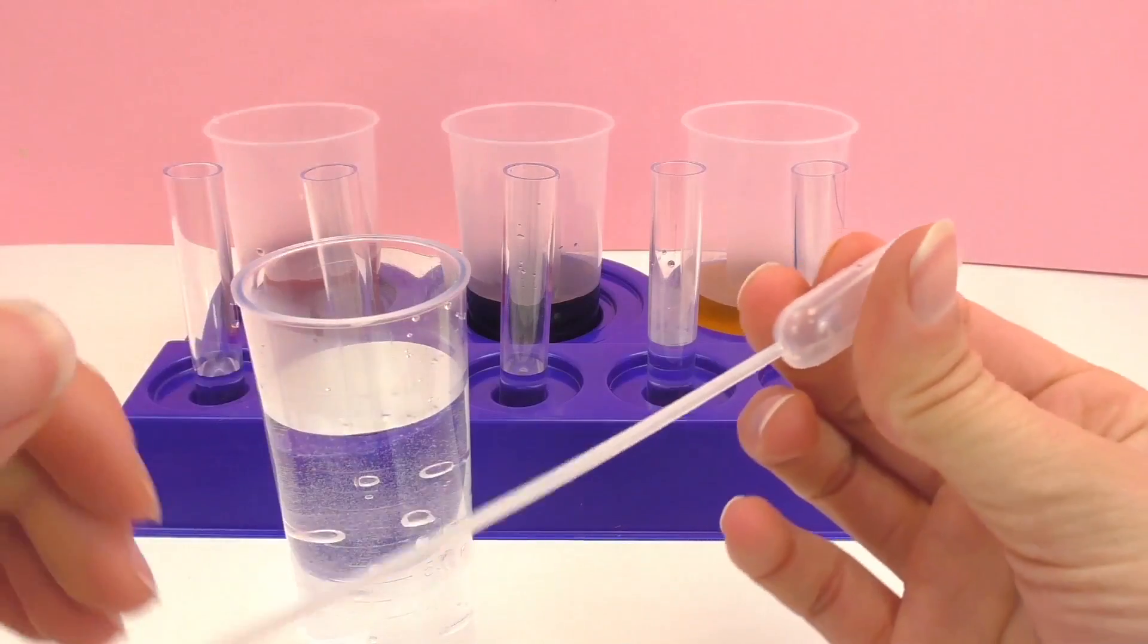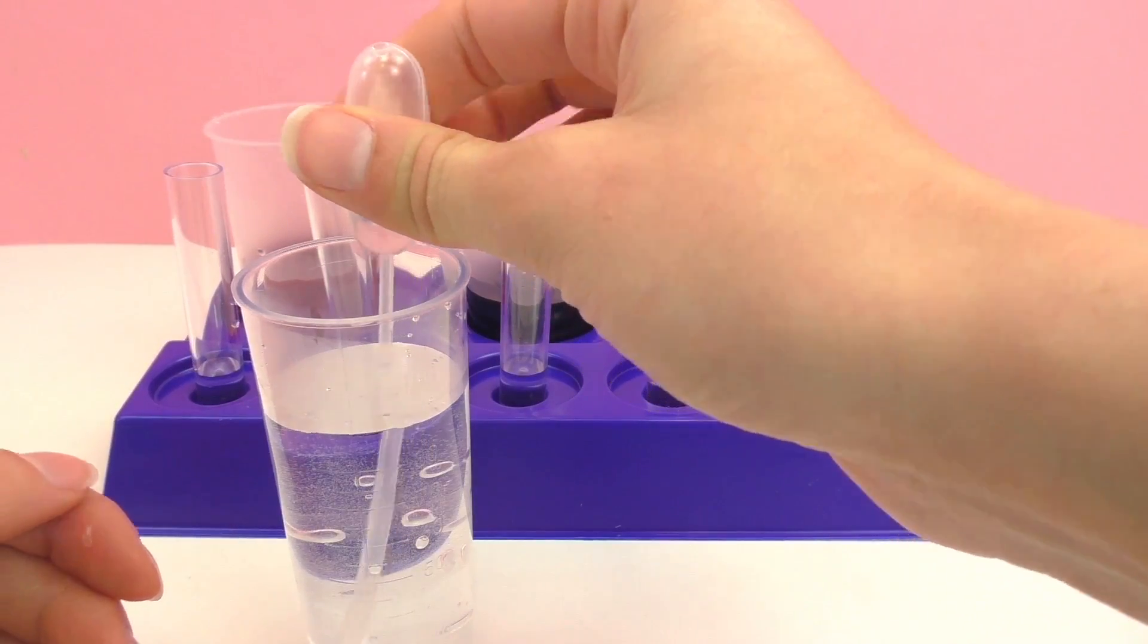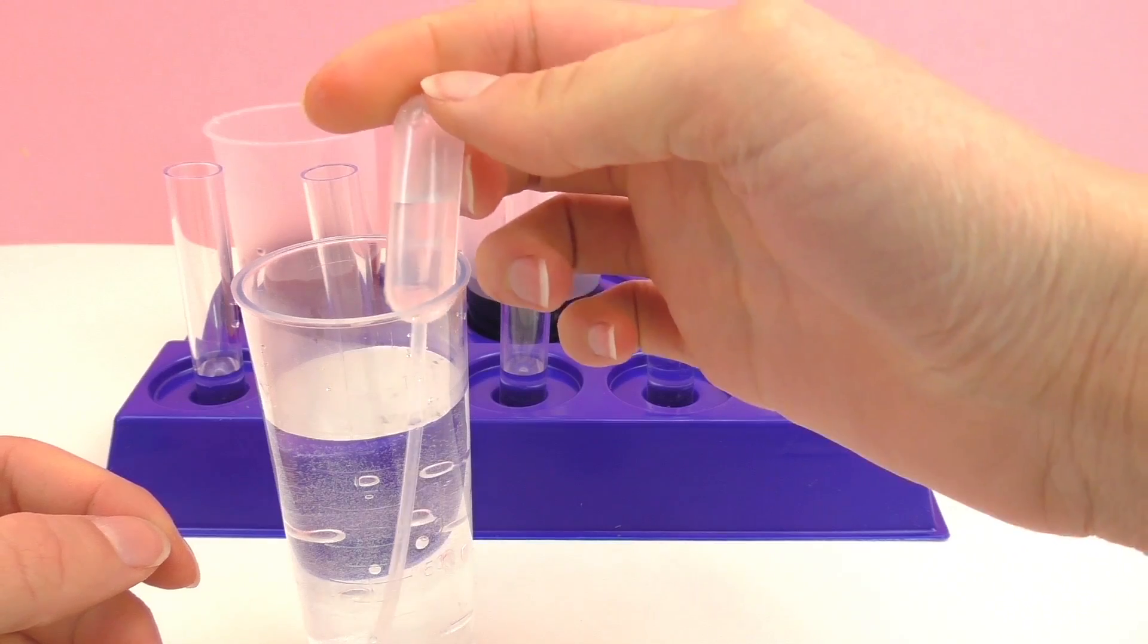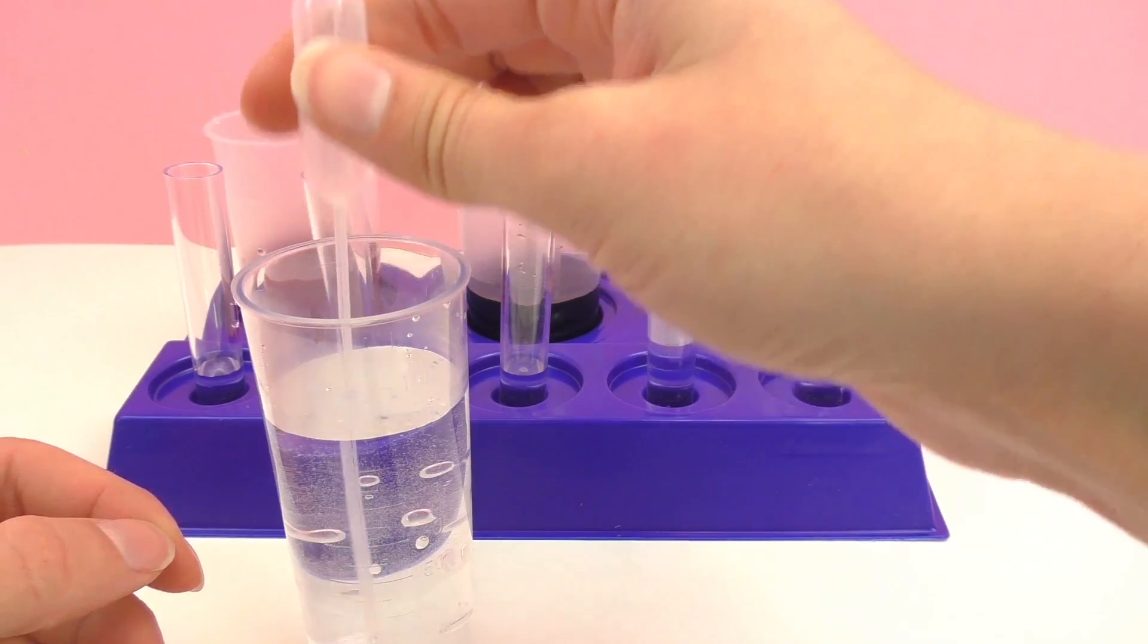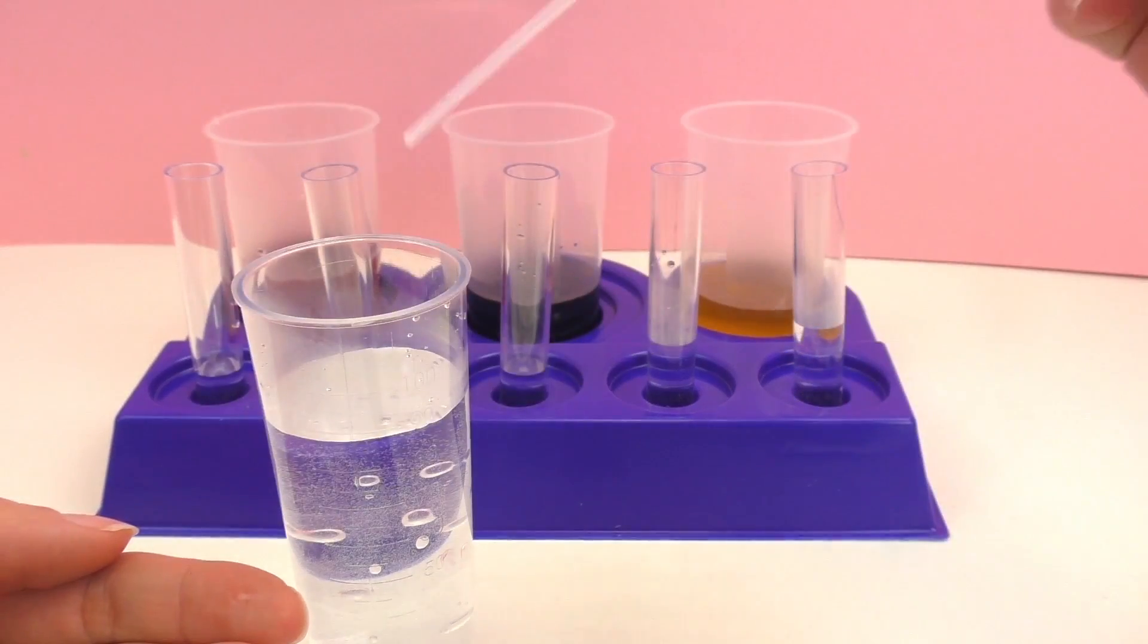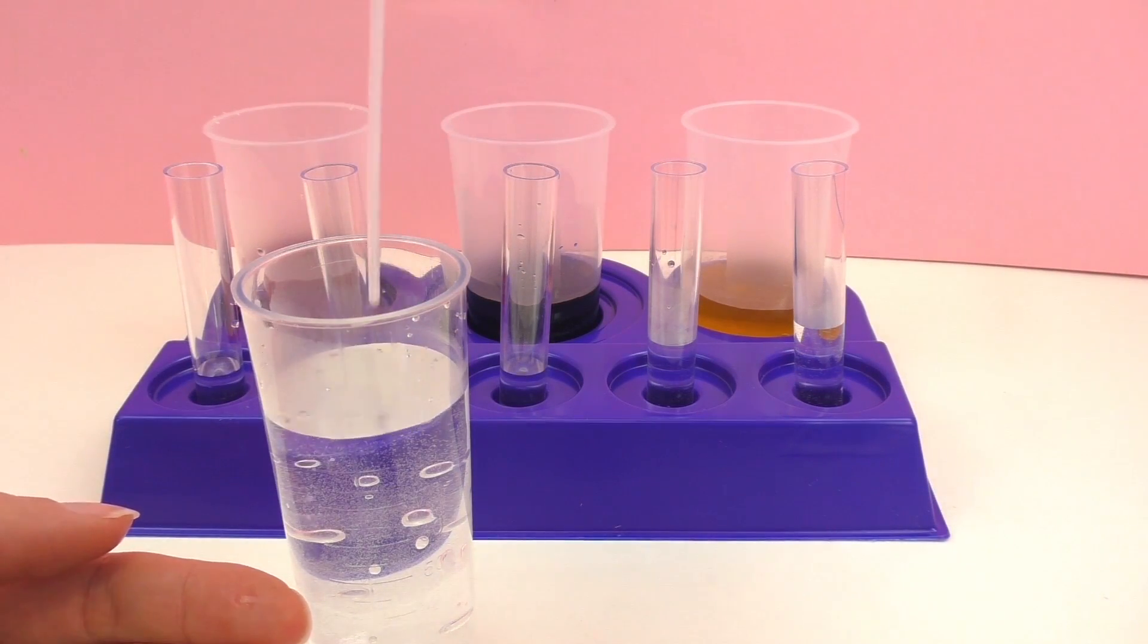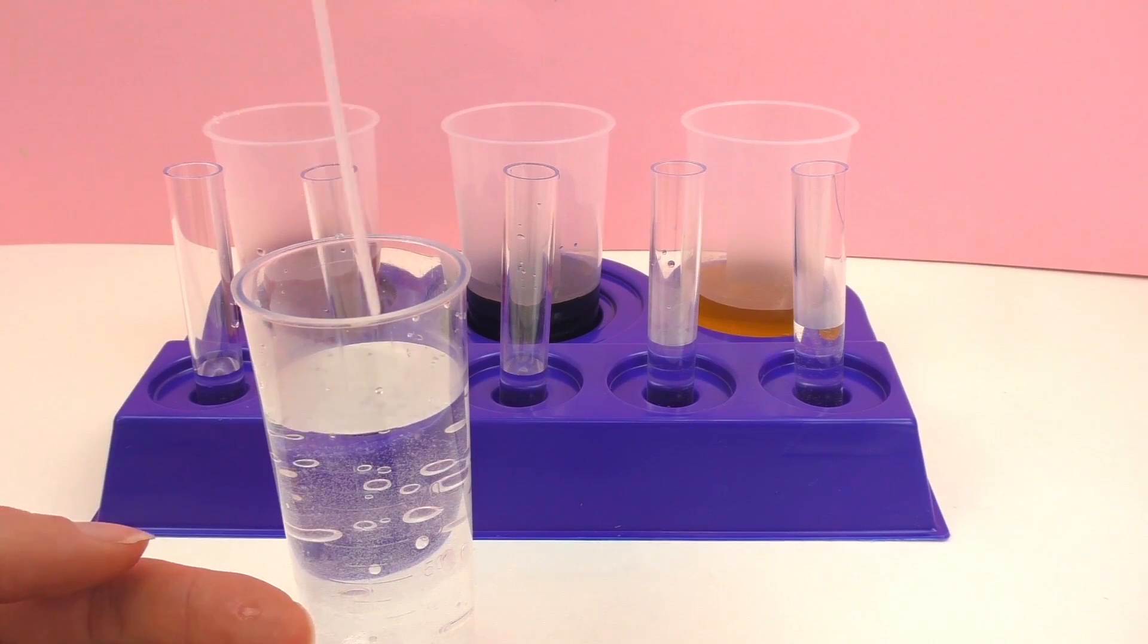So what you're going to do is squeeze in the top part of the eyedropper, dip it into the water and then release. As you can see the water goes up into the eyedropper. If you want to take water out slowly, just press very lightly on the top. This gives you single droplets, or of course you can press harder and it comes out quite a bit faster.